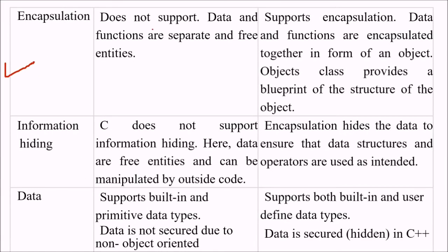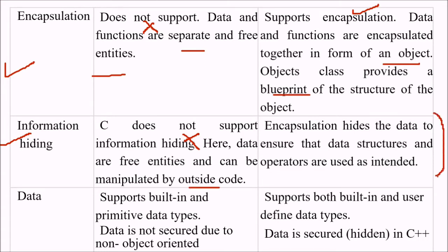C does not support encapsulation — data and functions are separate and free entities. While in C++, data and functions are encapsulated together to form an object, and a class provides a blueprint of the structure of the object. C does not support information hiding; data can be manipulated by outside code. In C++, encapsulation hides the data to ensure data structures and operators are used as intended.